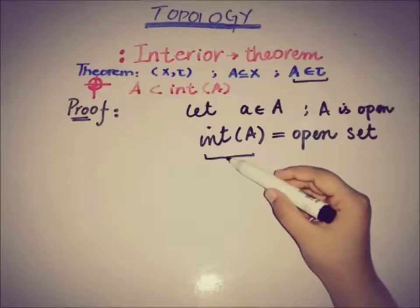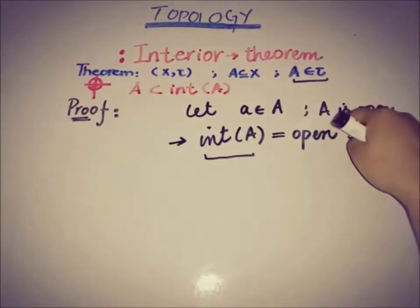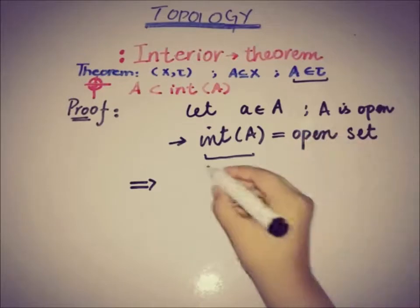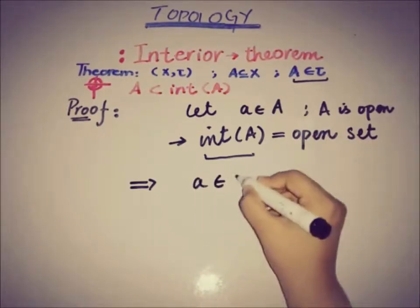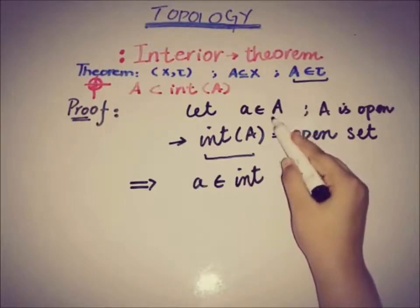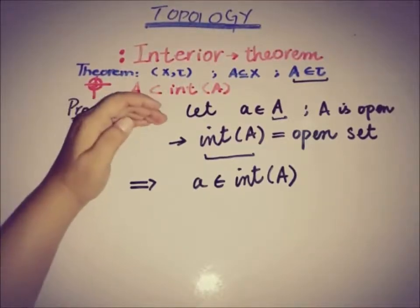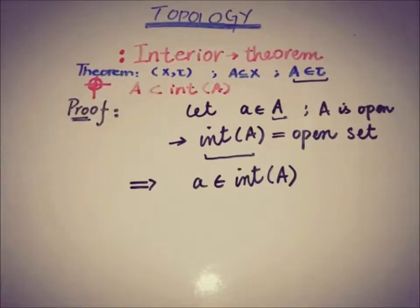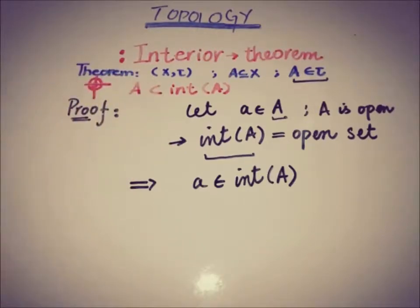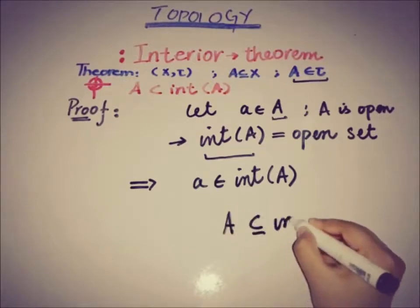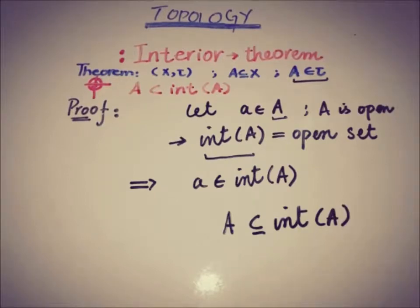The interior of A is the union of all open sets, and A is itself an open set. This implies that A is also a member of the interior of A. So the element a was a member of A, and by using the definition of the interior — since interior of A is the union of all open sets and A is an open set — this point a is also a member of the interior of A. Therefore, A is a subset of the interior of A.